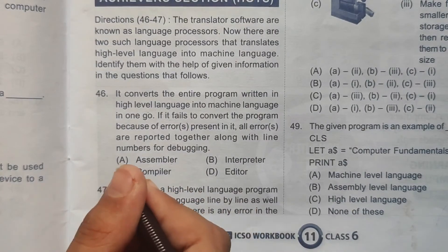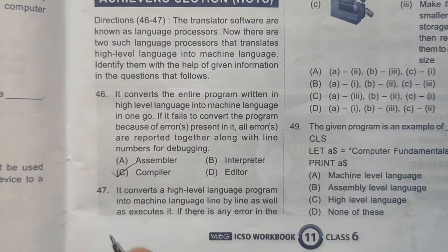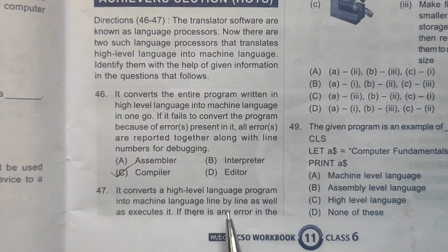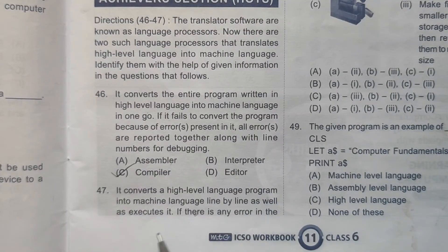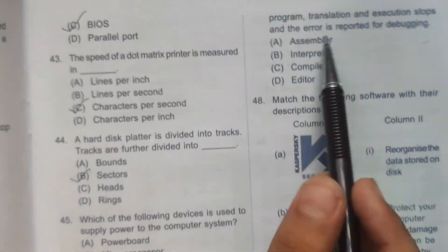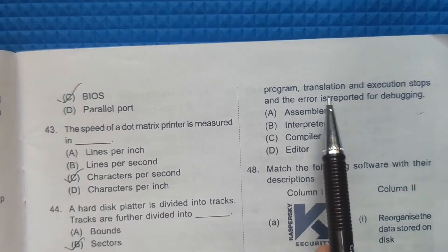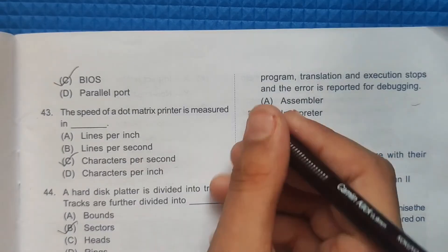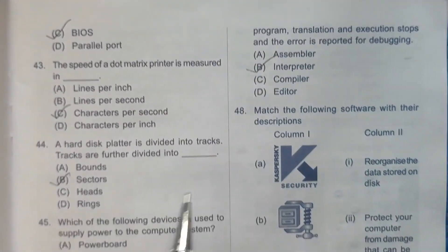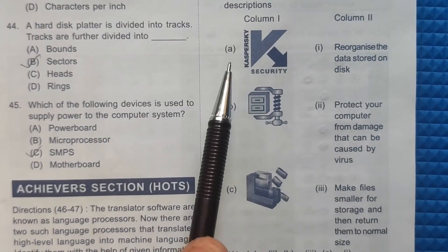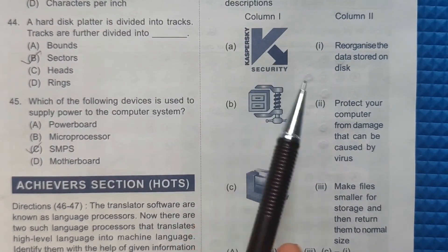Question 47: It converts a high-level language program into machine language line by line and also executes it. If there is any error, translation and execution stops and the error is reported for debugging. Our correct answer here will be option B — this is an interpreter.